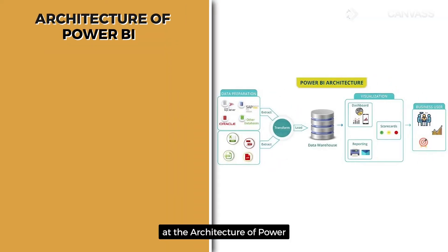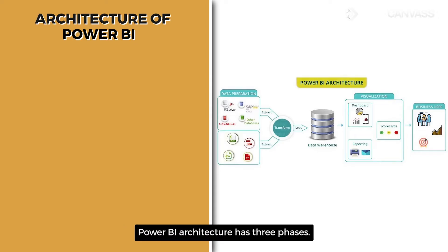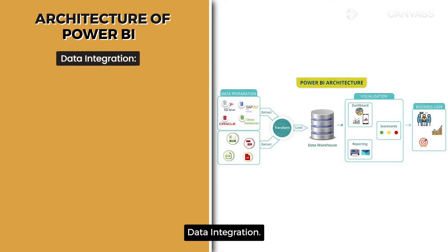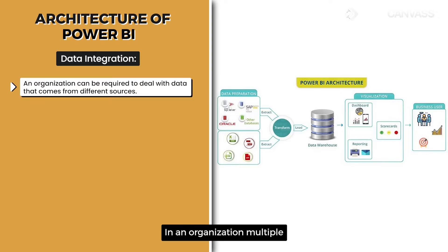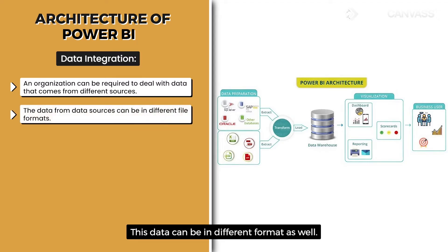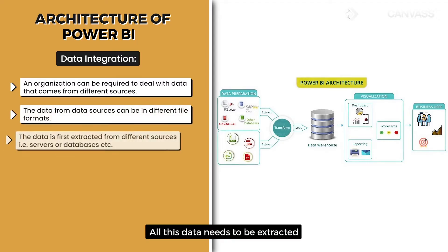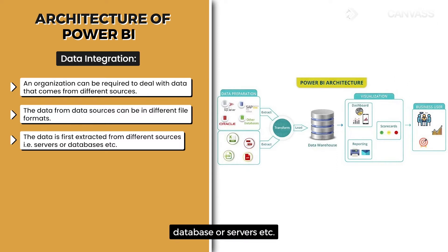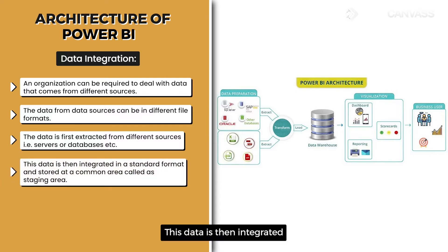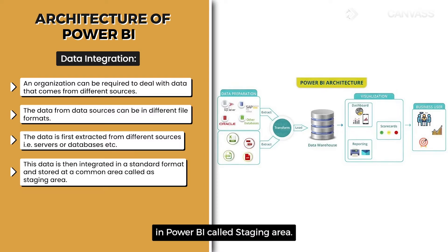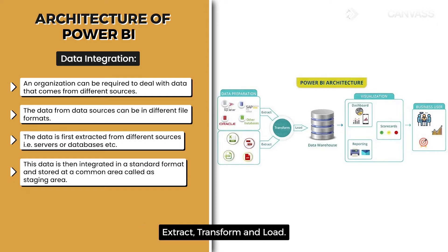Now let us look at the architecture of Power BI in more detail. Power BI architecture has three phases. The first phase is Data Integration. In an organization, multiple sources are used to store data in different formats. All this data needs to be extracted from different sources such as databases or servers. This data is then integrated into a standard format and stored in a common area in Power BI called the staging area. All this is done through ETL — Extract, Transform, and Load.